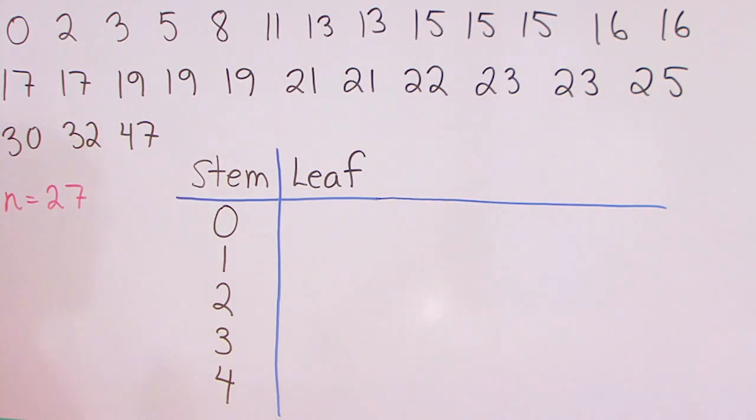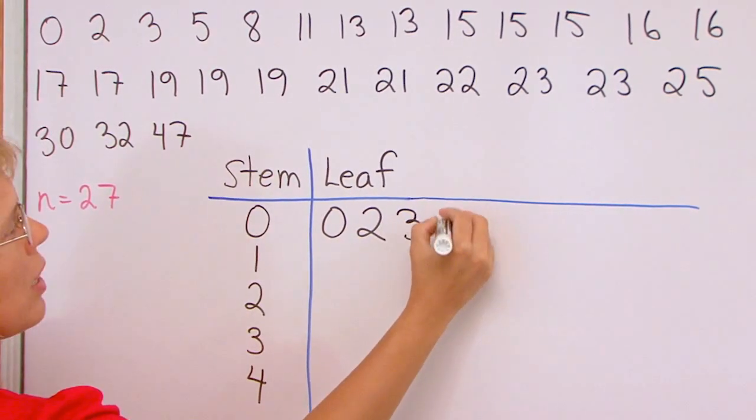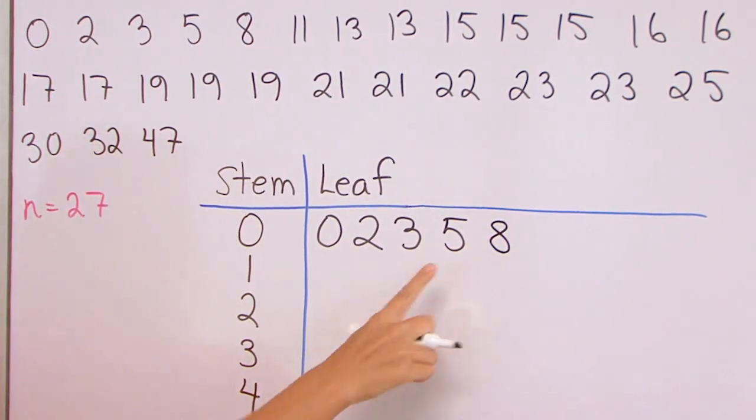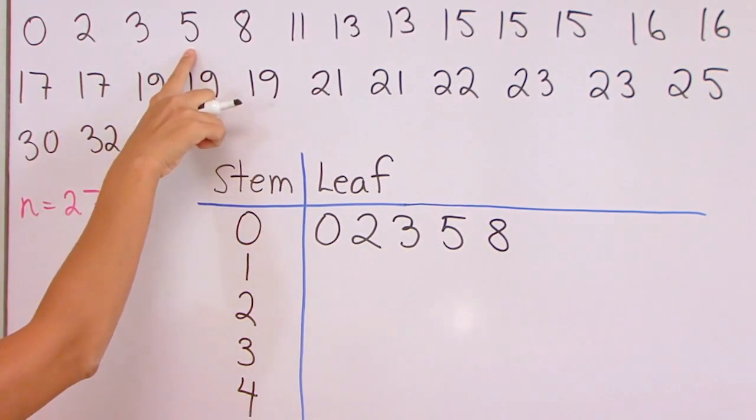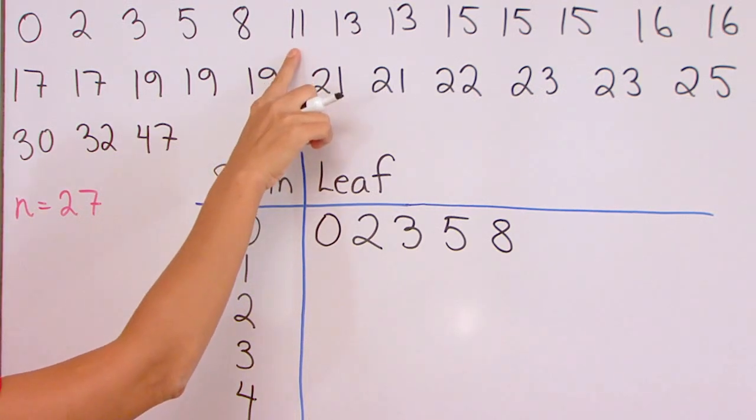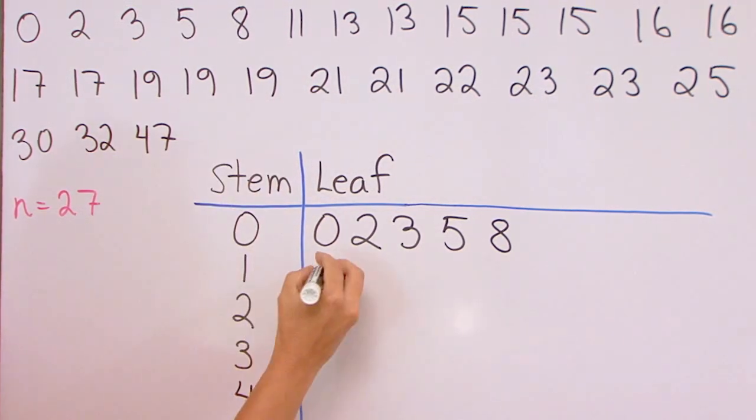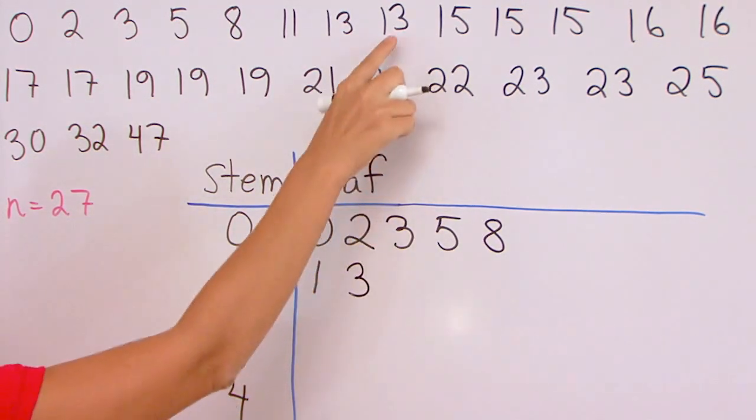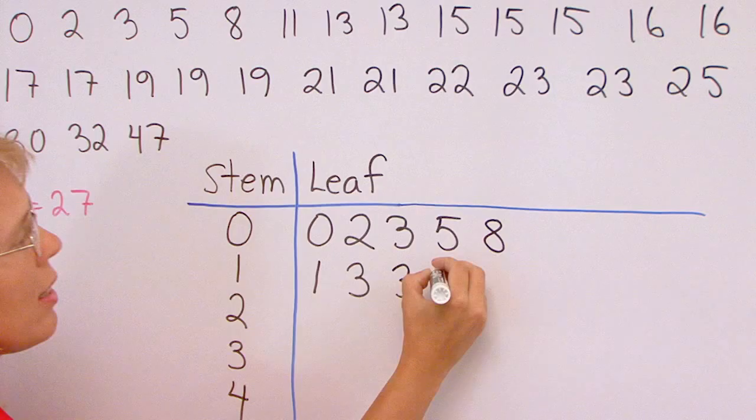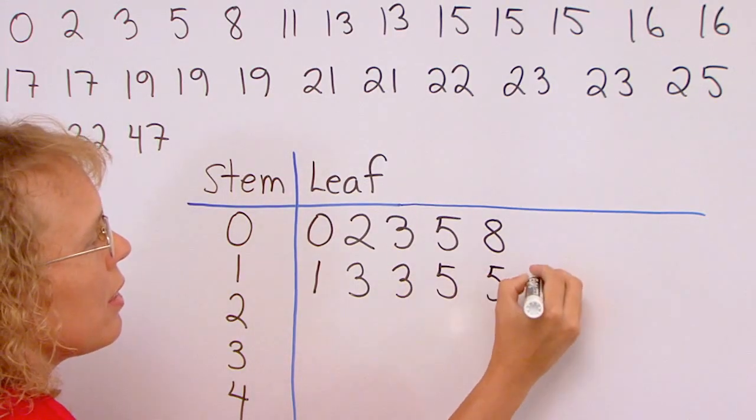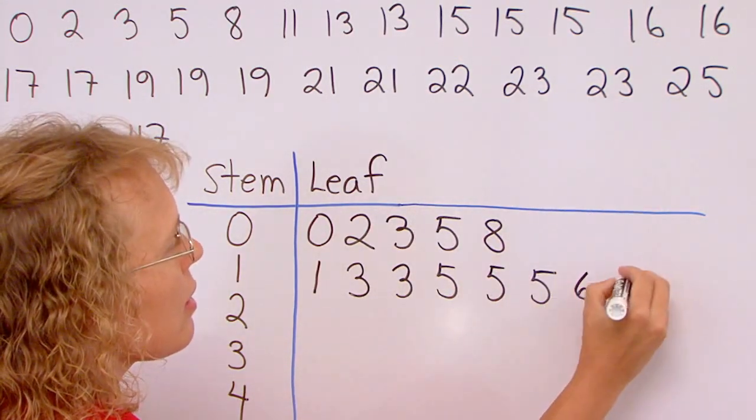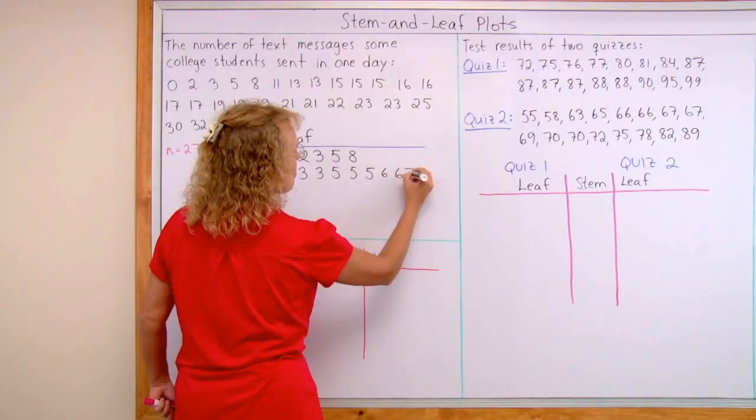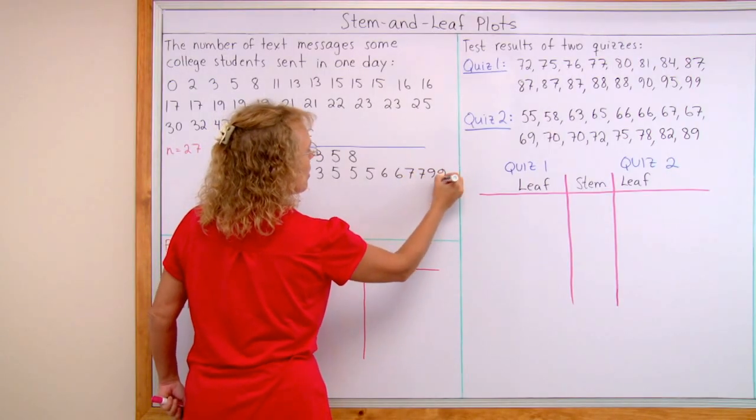Then for the leaves I take the ones digits: zero, then two, three, five, eight. So for example, five here means this particular data item. And then this one, eleven, will be written here as one ten and one. I just write the ones digit. Then thirteen will be one ten and three. And then this thirteen, I just write the three here. And then five, five, five, and then six, six, and then seven, seven, nine, nine, nine.